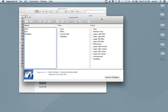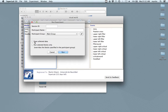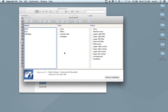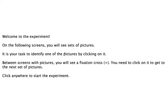We're going to try and recreate this experiment that you see here on the screen — it's just called Visual World. Let me click play to show you what it's all about. Welcome to the experiment. On the following screens you will see sets of pictures. It is your task to identify one of the pictures by clicking on it. Between screens you will see a fixation cross; click on it to get to the next set of pictures.